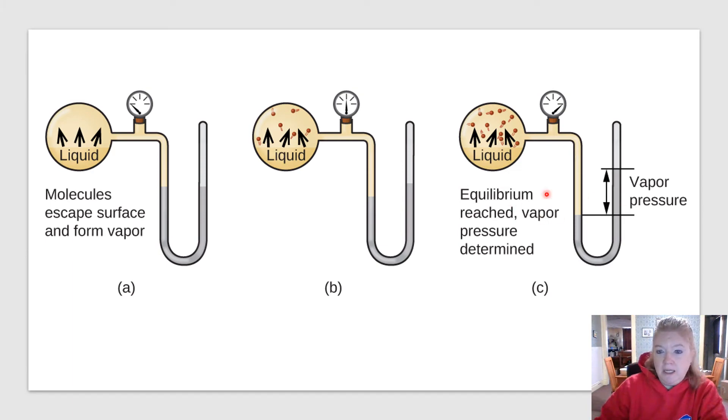Here again, we can see equilibrium being reached. Molecules escaping from the surface, forming a vapor as a result of vapor pressure. We have particles escaping, going from liquid to gas. Eventually, we reach equilibrium and we can measure the vapor pressure. We have to close the container in order to measure it.